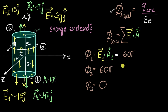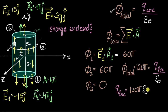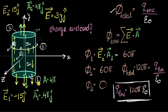Now that we have all flux values, the total flux is 60π + 60π + 0 = 120π. I can equate this to charge enclosed divided by epsilon naught. Therefore, charge enclosed equals 120π times epsilon naught. We know the value of epsilon naught, so we can plug that in and get a numerical answer.